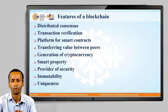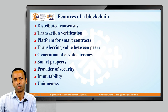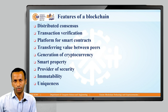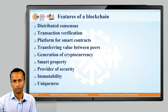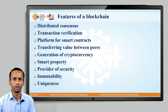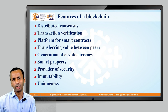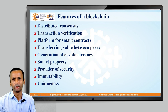Another feature is transferring value between peers. The value between different peers or nodes in a blockchain network is transferred using the concept of tokens. Next is the generation of cryptocurrency — this is a feature of blockchain but not applicable to every blockchain; it is an optional feature applicable mainly in the case of Bitcoin. Smart property is similar to a smart contract.